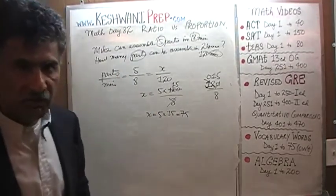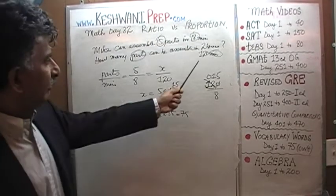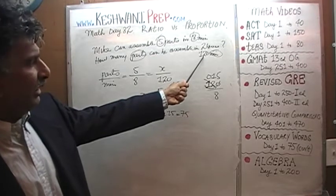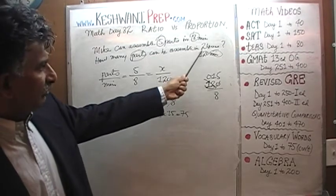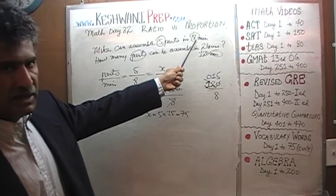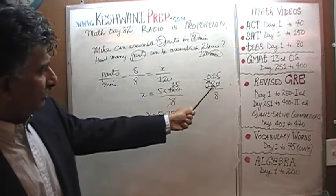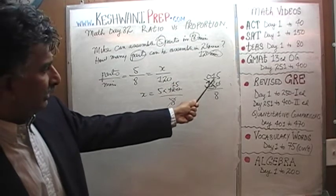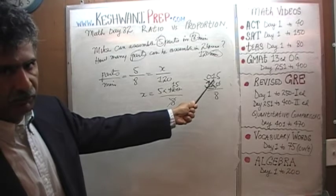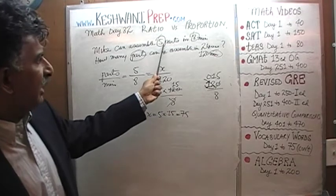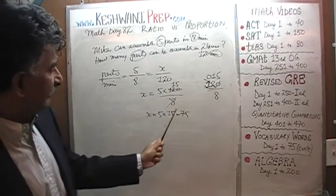If you didn't want to do it in such an academic way, you could simply ask yourself: how many eight-minute segments do we have in a period of 120 minutes? There are fifteen eight-minute segments in 120 minutes. And since we can do five parts in one segment, therefore we will do five times fifteen — seventy-five parts. Let's do the next one, shall we?